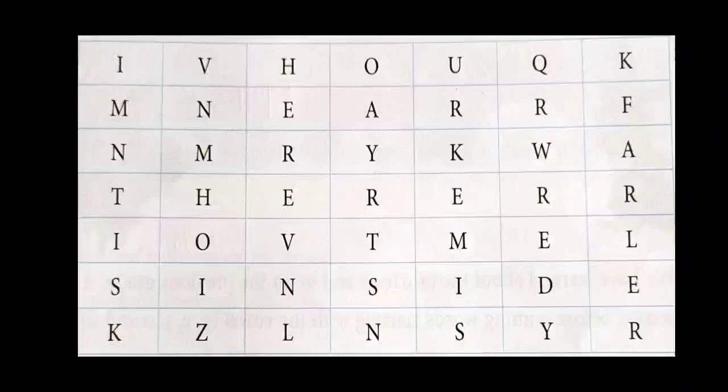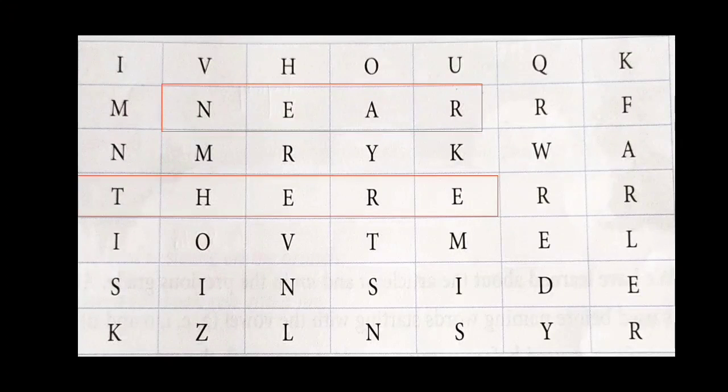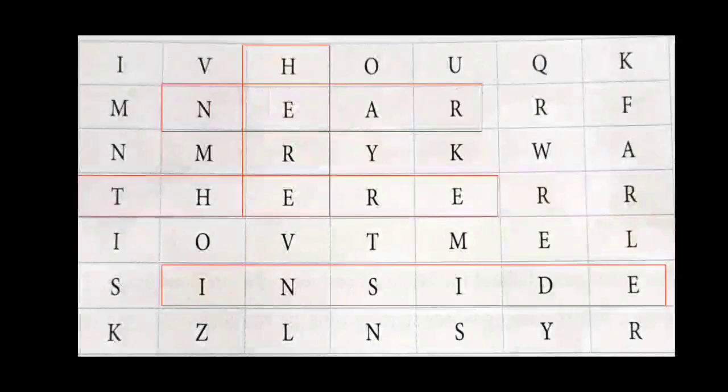Now, we have to find five adverbs of place from the word search. The first adverb of place is near. The second one is there. The third one is here. The fourth one is inside. And the last one is far.